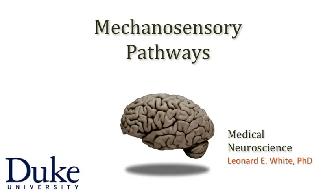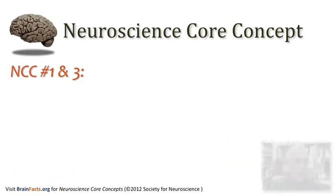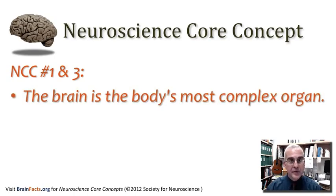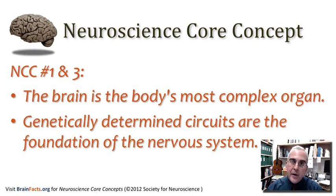Welcome back to our discussion of the mechanosensory systems, which are part of our broader systems we have within our bodies for processing somatic sensory information. All of this pertains to several foundational concepts in the field of neuroscience. Two in particular: first, that the brain is the body's most complex organ, and also that there are genetically determined circuits within the brain that are truly the foundation for the operations of the nervous system.